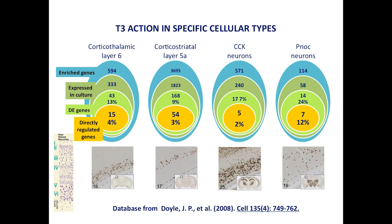It is also possible to look at the effect of T3 in specific cells from the cortical layers. We analyzed corticothalamic neurons in layer 6, layer 5A, CCK neurons, and Purkinje neurons. This demonstrates that T3 directly regulates gene expression in all these cell types.